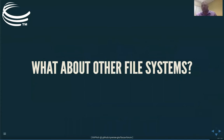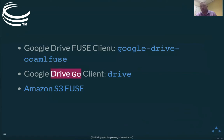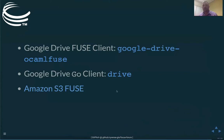A question some people may have is what about connecting to other types of file systems — perhaps data on Google Drive or Amazon. You can connect your VM to your Google Drive account by using Fuse clients like OCaml Fuse, or a Google Drive client written in the Go language. This is similar to a command line situation like we have with our iCommands, and I have links to these if you'd like to explore them.